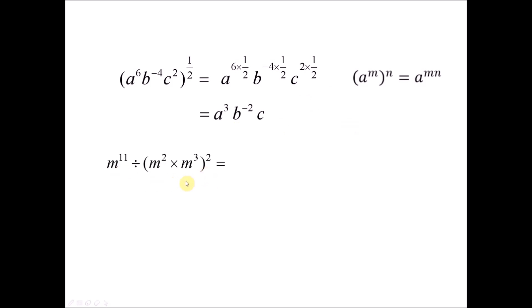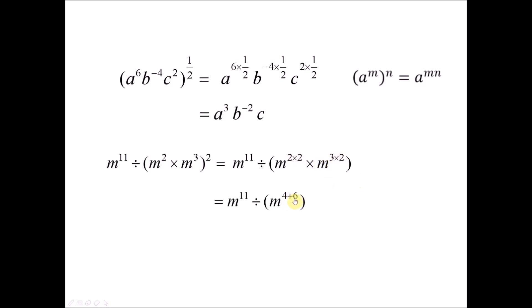For combined operations with brackets, the first thing you always do is get rid of the brackets. We apply the power rule: the outer exponent 2 multiplies the index 2 inside, giving 4, and multiplies the index 3, giving 6. So you get the base to the power of 4 plus 6, which is 10. Since there is a division, you compute 11 minus 10, giving m to the power of 1, which is m.